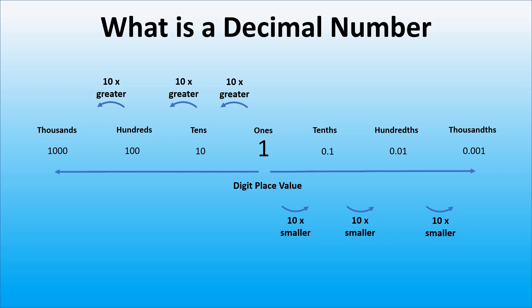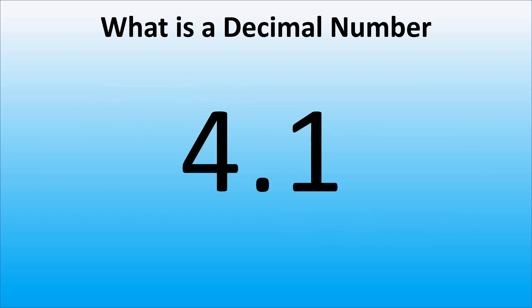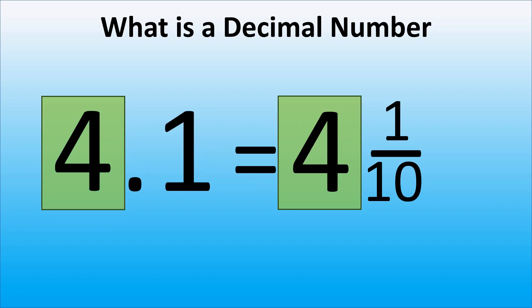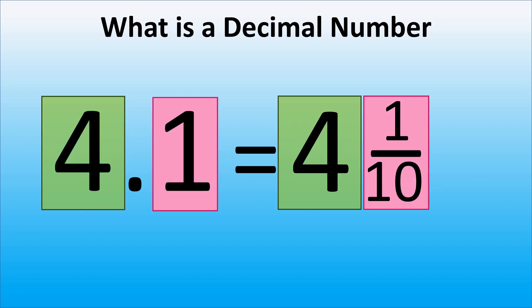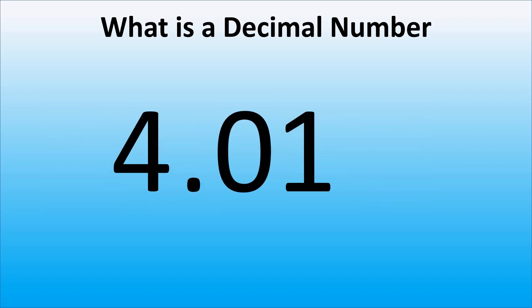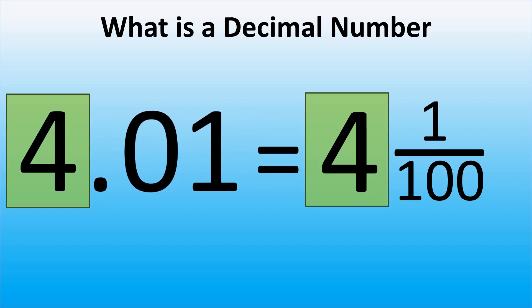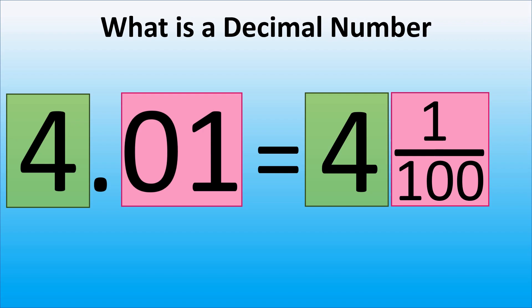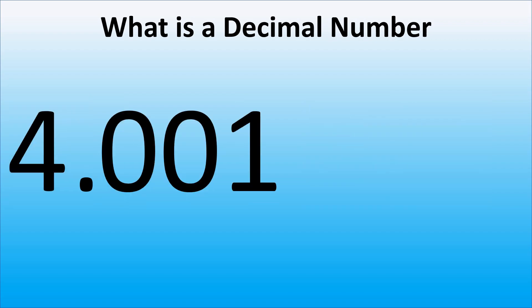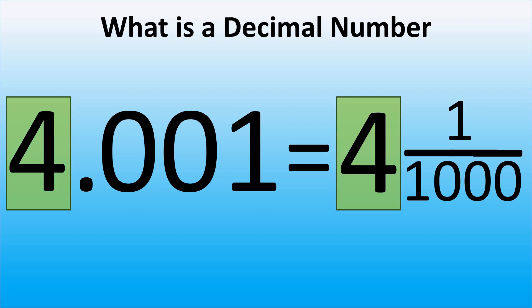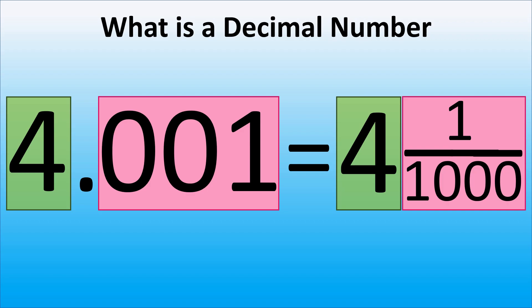To remind you, power tells us how many times a number is multiplied by itself. Knowing that, we can rewrite a decimal part as a fraction. So the decimal number 4 and 1 tenths can be rewritten as 4 and 1 over 10. The decimal number 4 and 1 hundredths can be rewritten as 4 and 1 over 100. Also, 4 and 1 thousandths can be rewritten as 4 and 1 over 1,000.